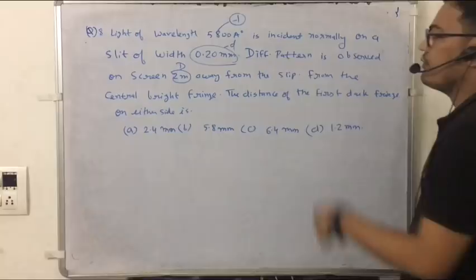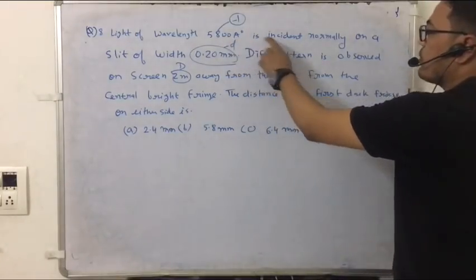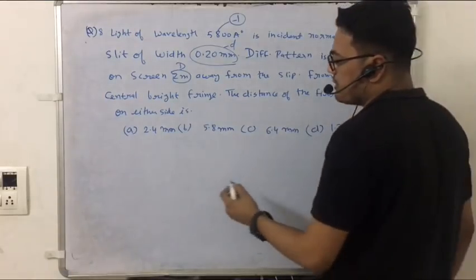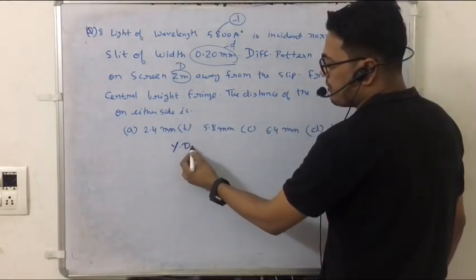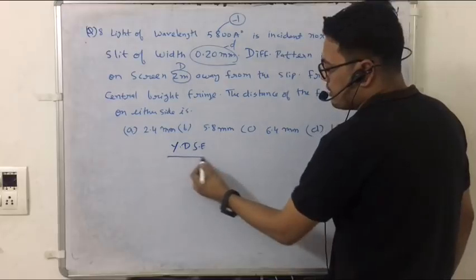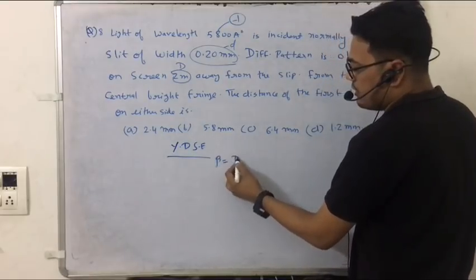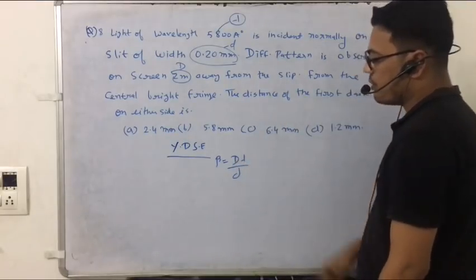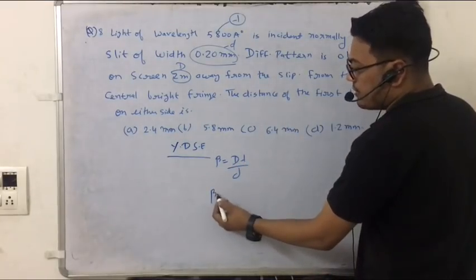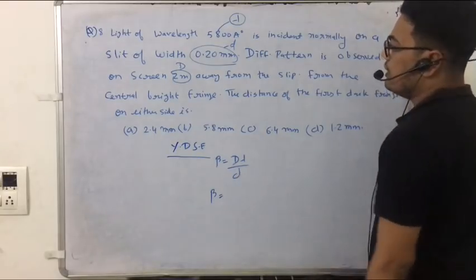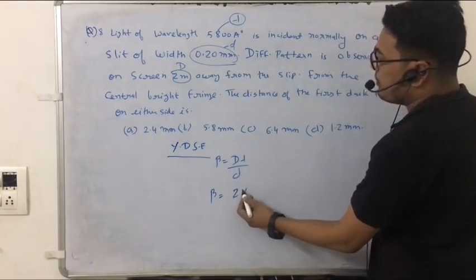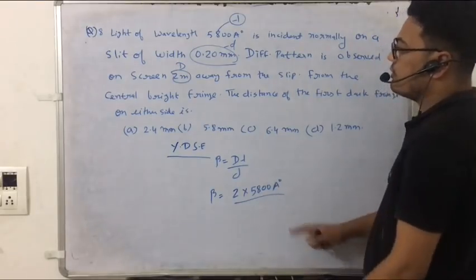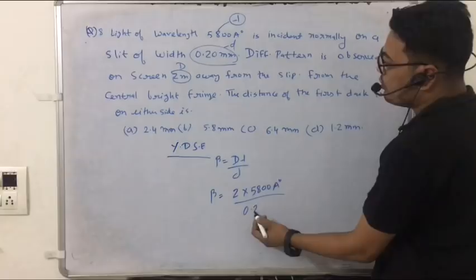The next question is light of wavelength 5800 angstrom. Distance D is equal to 2 meter. This is a Young double-slit experiment. We should know that beta is equal to lambda D upon d. For the first dark fringe, the distance is lambda D upon 2d. D is 2 meter, lambda is 5800 angstrom, and d is equal to 0.2 mm. After calculation, we get the answer.